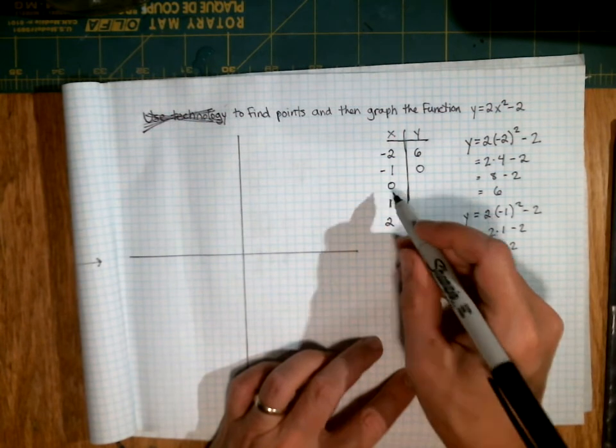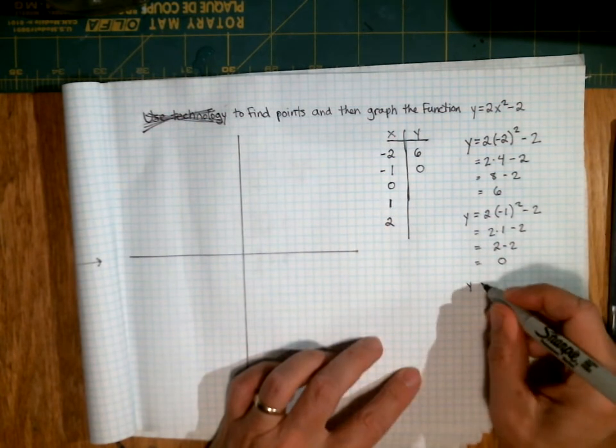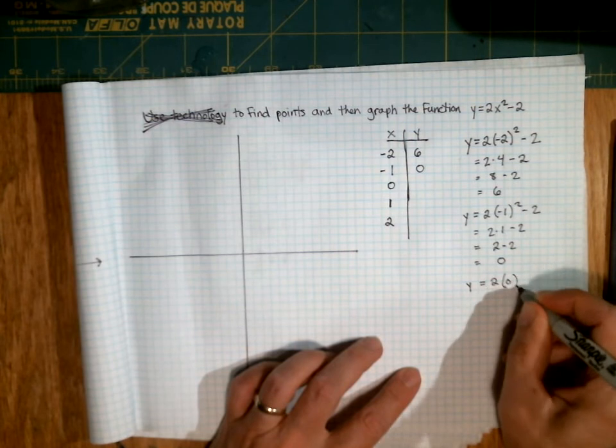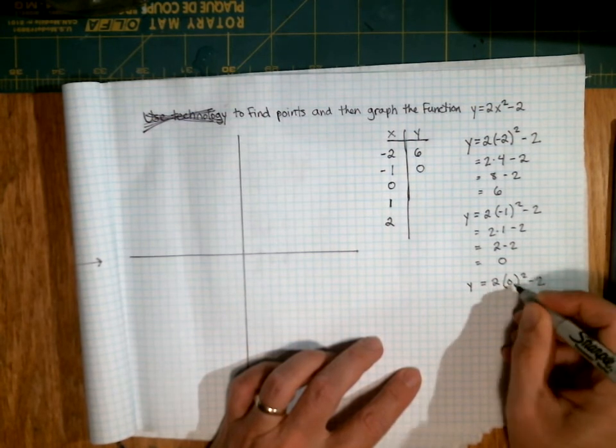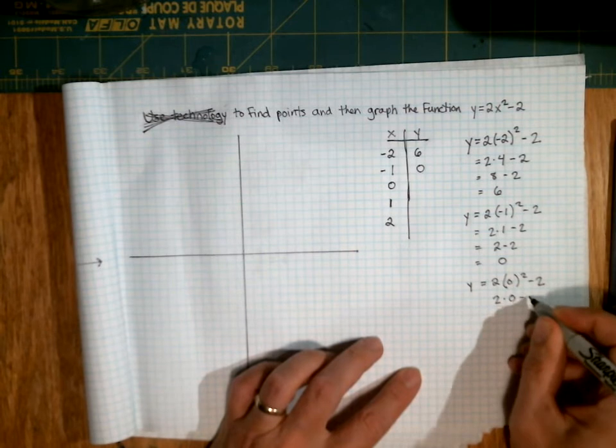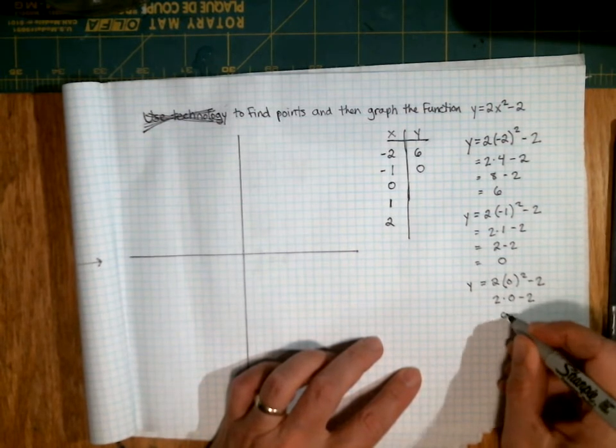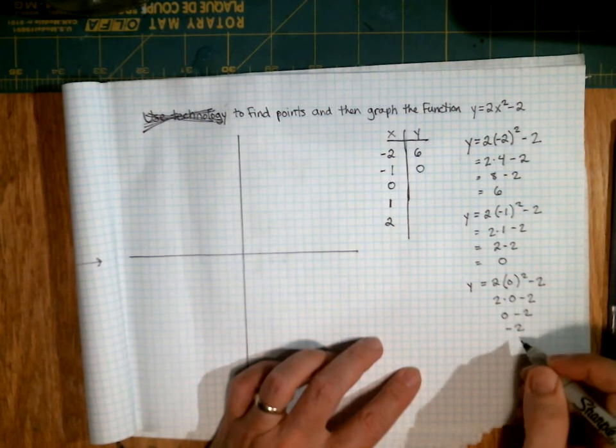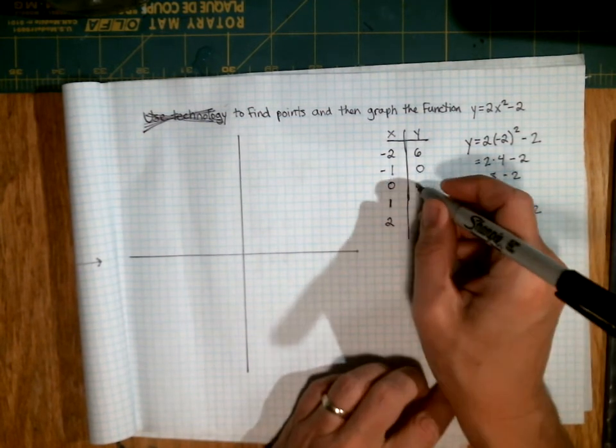I always really like substituting 0 in for x because usually it's pretty easy. 2 times 0 squared minus 2. 0 squared is 0. So this is just 2 times 0 minus 2, which is negative 2. So y equals negative 2 when x is 0.